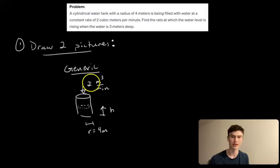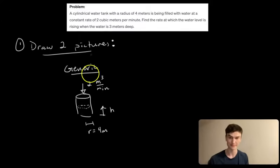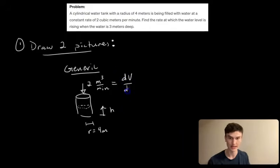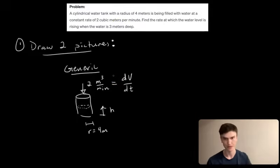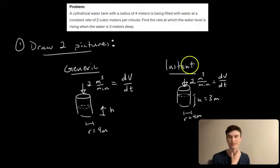In your generic picture, you want to label your variables. How can we represent 2 meters cubed per minute symbolically? This is a volumetric flow rate — volume per time — so that's the rate of change of volume with respect to time: dV/dt. Next, once we have all our generic info, we draw a picture specific to the instant in time we want to solve for.